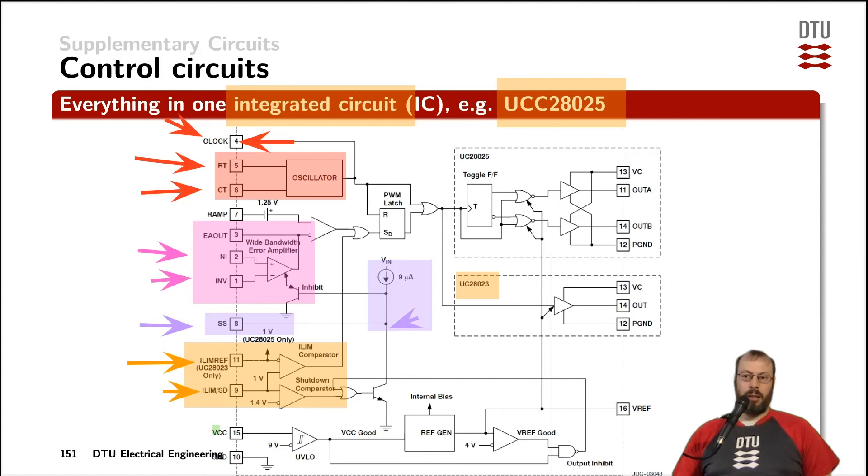Down here we can see the supply pins of the circuit pin 15 and pin 10 with an under voltage lockout functionality here trimmed to operate at 9 volts and when VCC is good that is when we are within the operating range of the supply voltage.